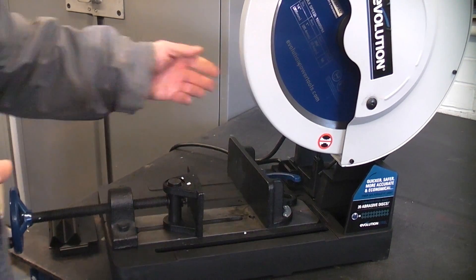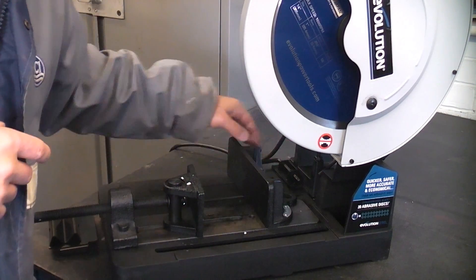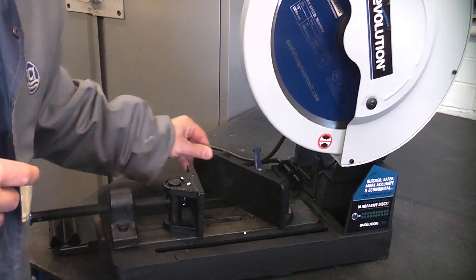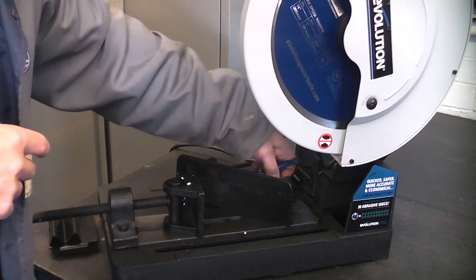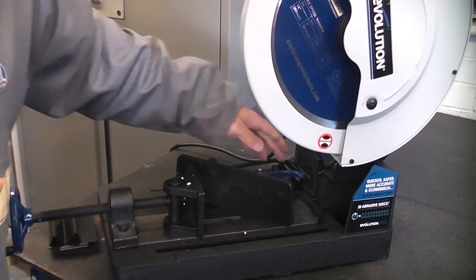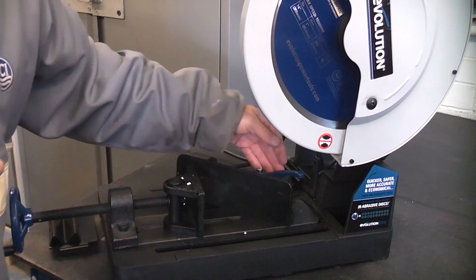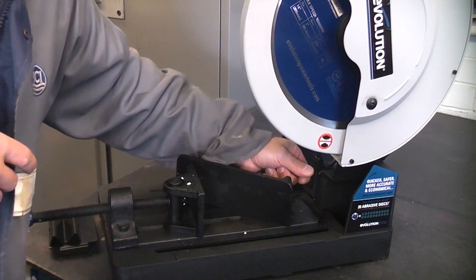You can easily change the angle from zero to 45 degrees by undoing that lever at the back and then you can turn that until you get it on the 45 degree mark and then you can lock off the handle again. So changing the angle on this machine is very easy.